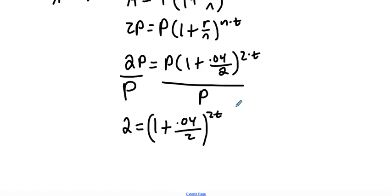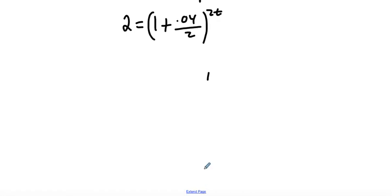So really what we see here now is we can introduce our log properties that we've been learning, and we can take the log of both sides. This is one of those properties that we learned a few sections back. So let's just go ahead and take the log of both sides. The log of 2 is equal to the log of the quantity one plus 0.04 over 2 to the power of 2T.